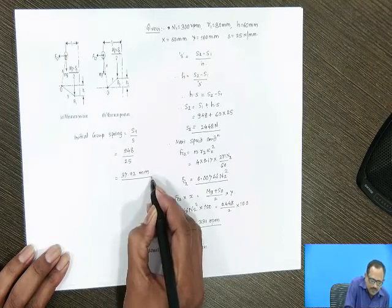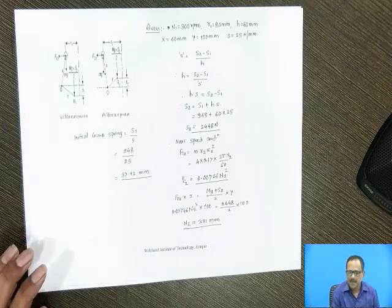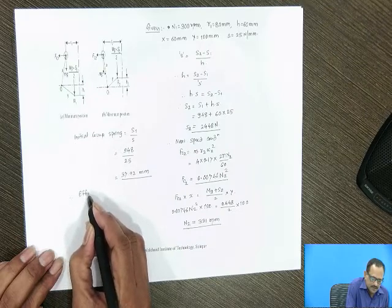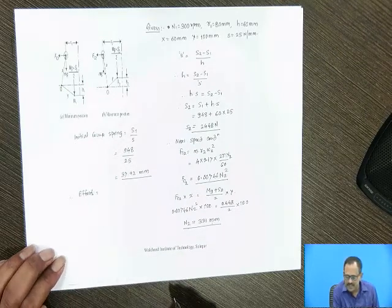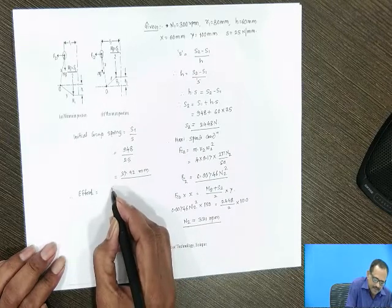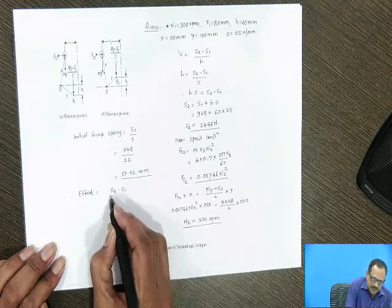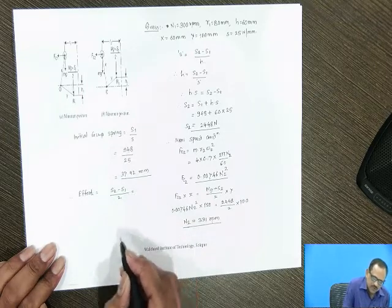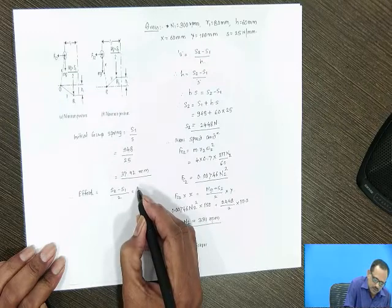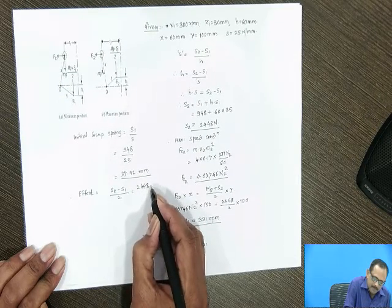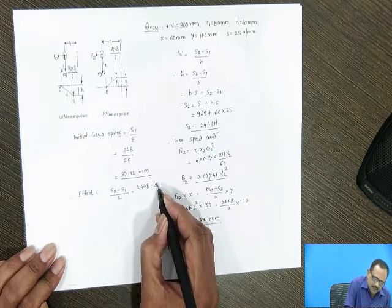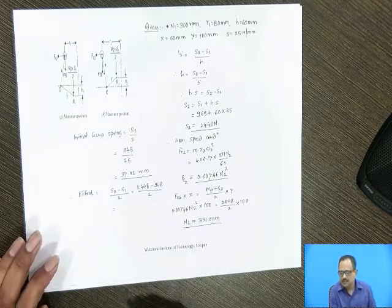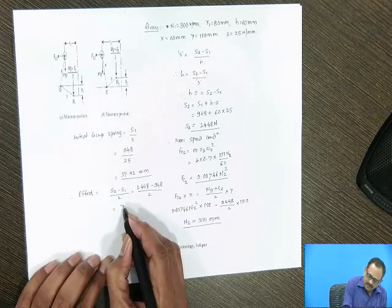This is the initial compression of the spring. Effort of the governor in case of Hartnell Governor is calculated by the difference between the spring force S2 minus S1 divided by 2. The value of S2 is 2448 minus 948 divided by 2, therefore the effort of the governor is 750 Newton.